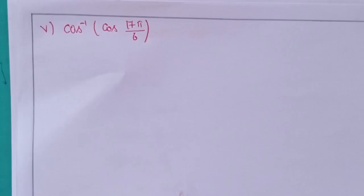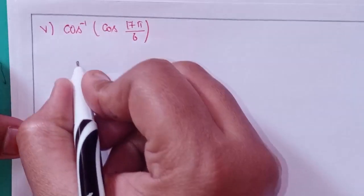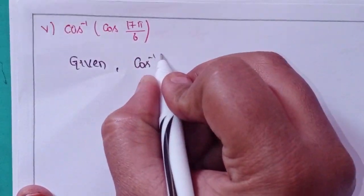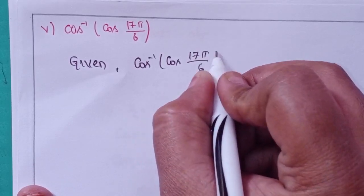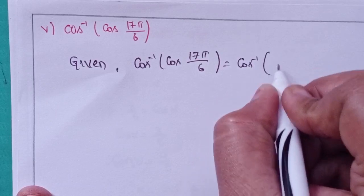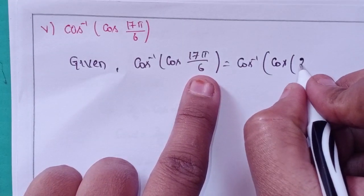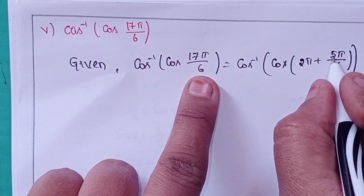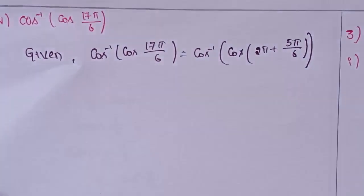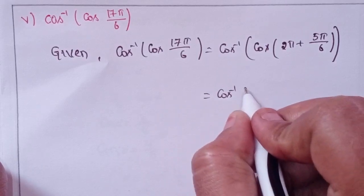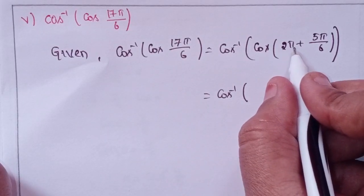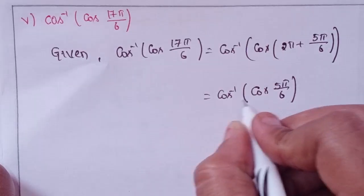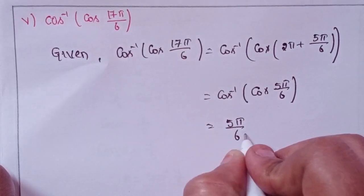Fifth problem: cos inverse of cos 17π by 6. We can write 17π by 6 as 2π plus 5π by 6. Cos of 2π plus theta equals cos theta, so cos 17π by 6 equals cos(5π by 6). These two cancel, giving 5π by 6 as the solution.